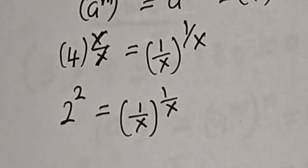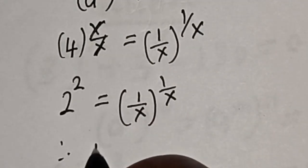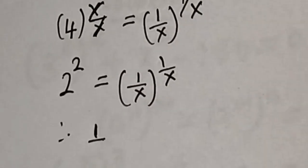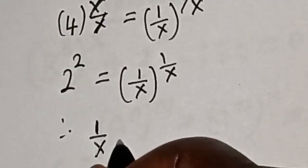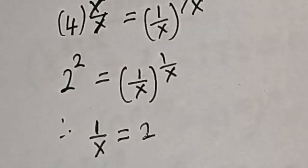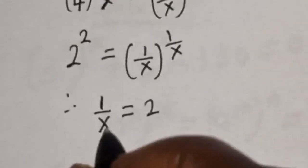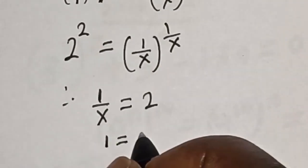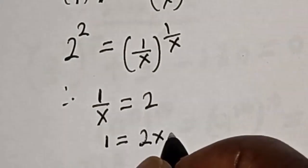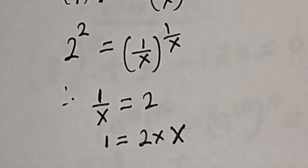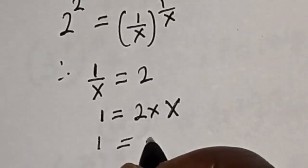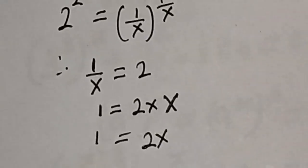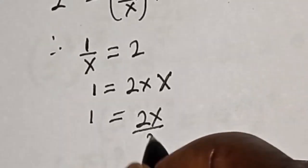Now let's cross multiply. 1 is equal to 2 multiplied by x. Then 1 is equal to 2x. Now let's divide both sides by 2.